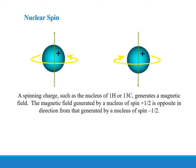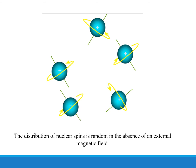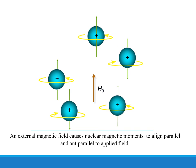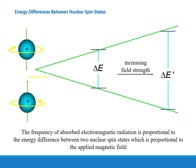A spinning charge, such as the nucleus of 1H or 13C, generates a magnetic field. The magnetic field generated by a nucleus of spin plus one-half is opposite in direction from that generated by a nucleus of spin minus one-half. The distribution of nuclear spins is random in the absence of an external magnetic field. An external magnetic field, represented by H0, causes nuclear magnetic moments to align parallel and anti-parallel to the applied field. The frequency of absorbed electromagnetic radiation is proportional to the energy difference between the two nuclear spin states, which is proportional to the applied magnetic field.